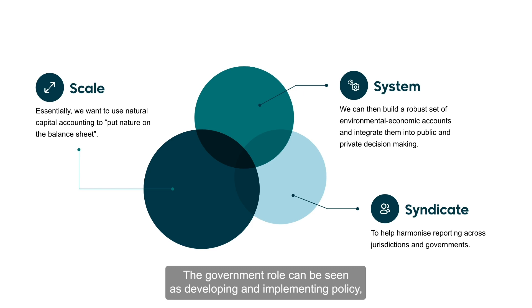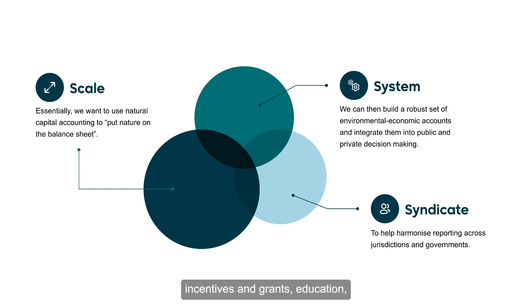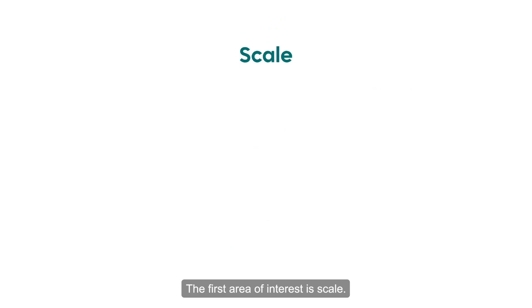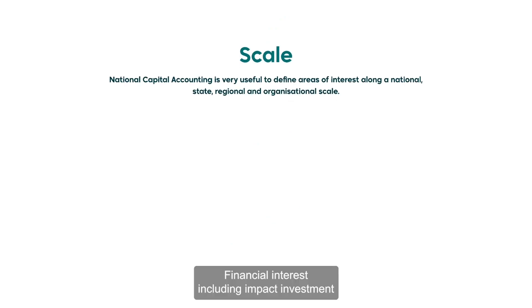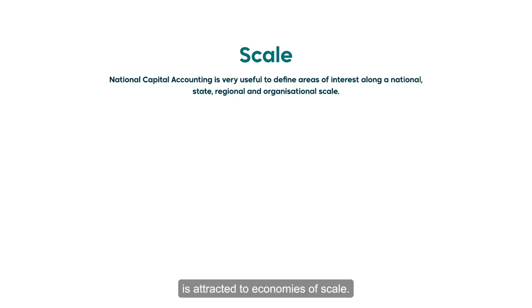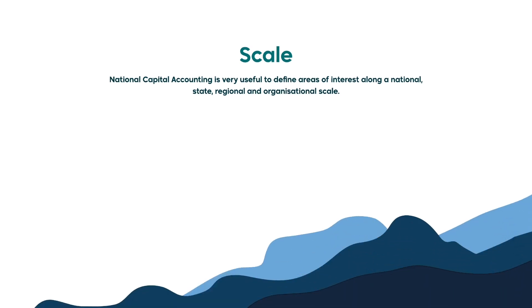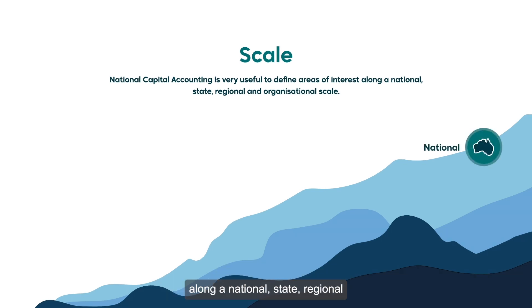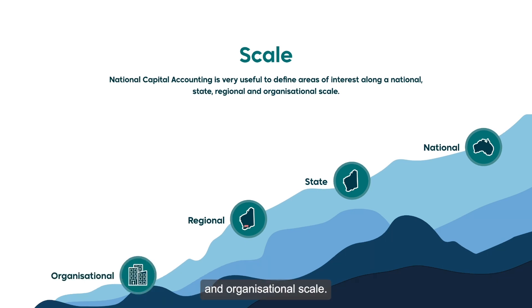The government role can be seen as developing and implementing policy, incentives and grants, education, benchmarking, market regulation and definition. The first area of interest is scale. Financial interest, including impact investment, is attracted to economies of scale. Natural capital accounting is very useful to define areas of interest along a national, state, regional and organisational scale.